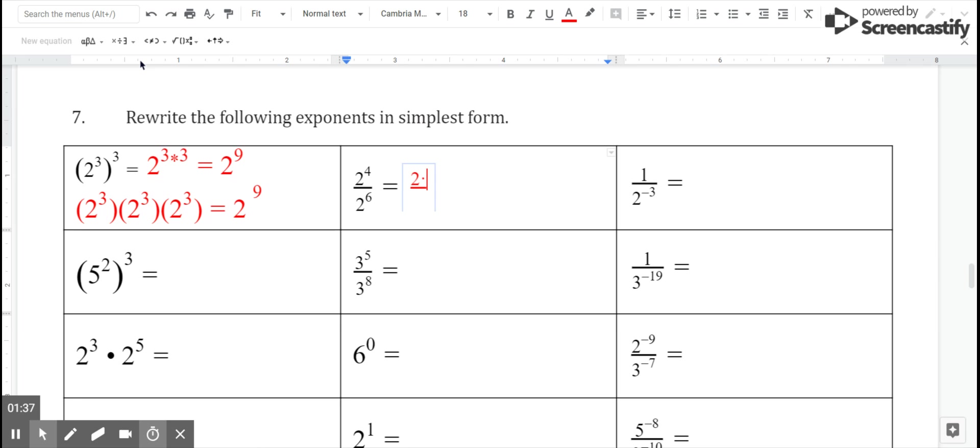So two to the fourth is the same thing as two times two times two times two. And two to the sixth is the same thing as two times itself six times. So there's four times five times six times.